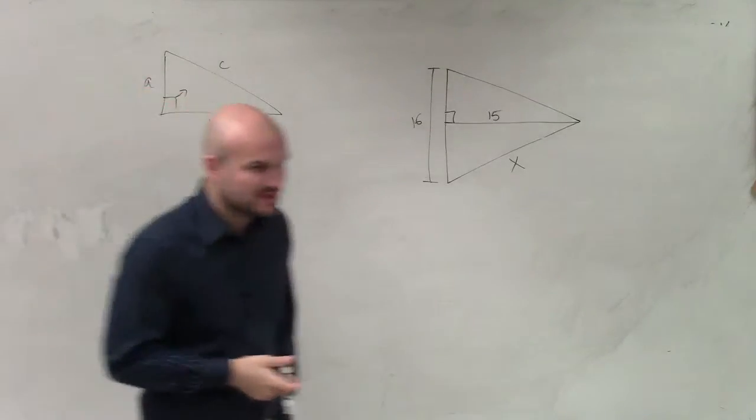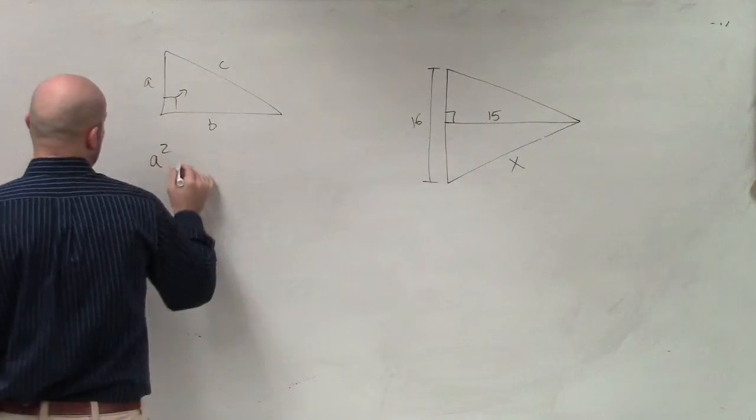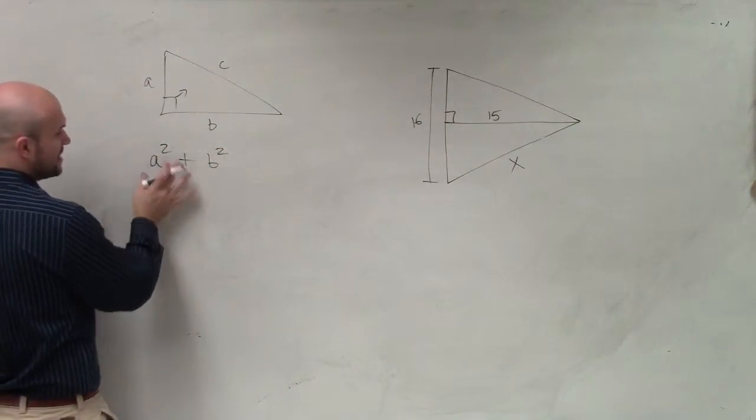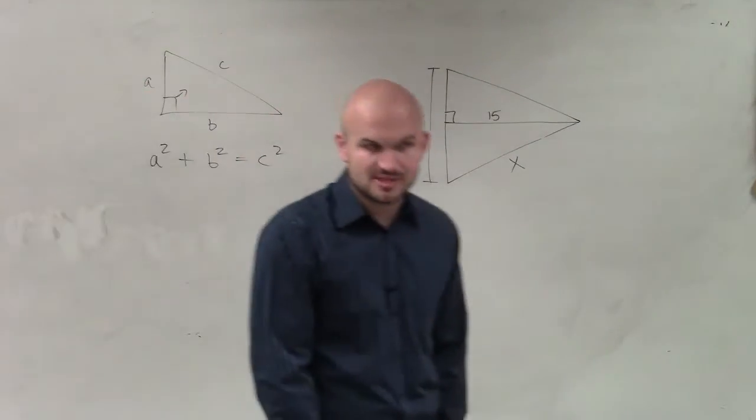And the relationship between the sides of a right triangle with the two legs and the hypotenuse is the square of the sum of two legs, or when you take the sum of the square of both legs, that equals the hypotenuse squared. a squared plus b squared equals c squared.